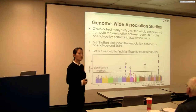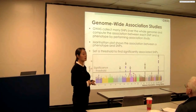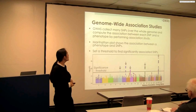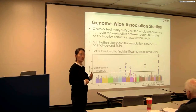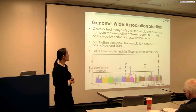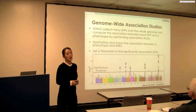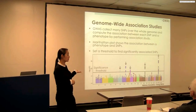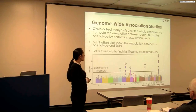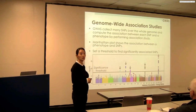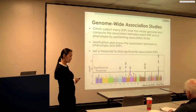With the advent of high-throughput technologies, it's possible to perform genetic association studies on a genome-wide scale — we call it genome-wide association studies, GWAS. In GWAS, we collect many SNPs over the whole genome and look for the correlation between each SNP and the phenotype. We show the results in a plot called the Manhattan plot, where the x-axis shows SNP locations color-coded by chromosome, the y-axis shows the strength of the association, and we use a predetermined significance threshold to find variants associated with the phenotype of interest.